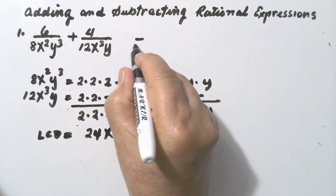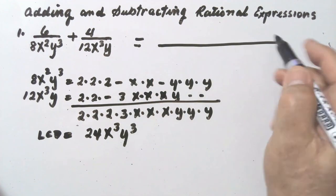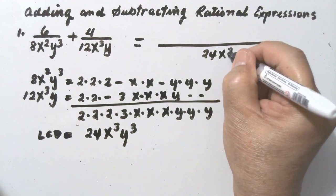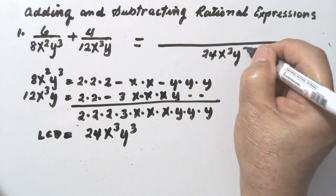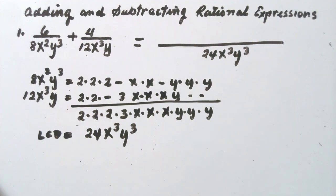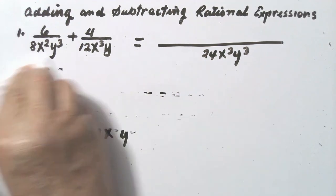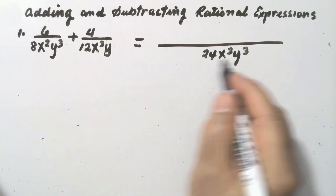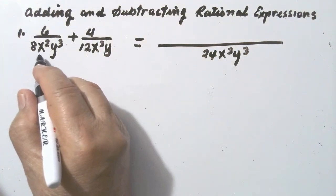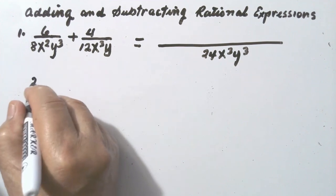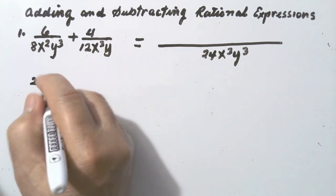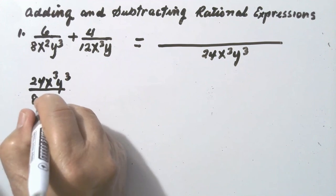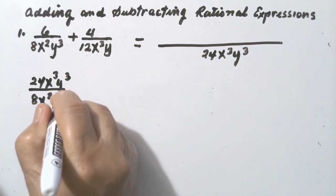So this is equal to — the least common denominator is 24x cubed y cubed. Let us erase this first. Divide the least common denominator by 8x squared y cubed. Let us show it here: 24x cubed y cubed divided by 8x squared y cubed.